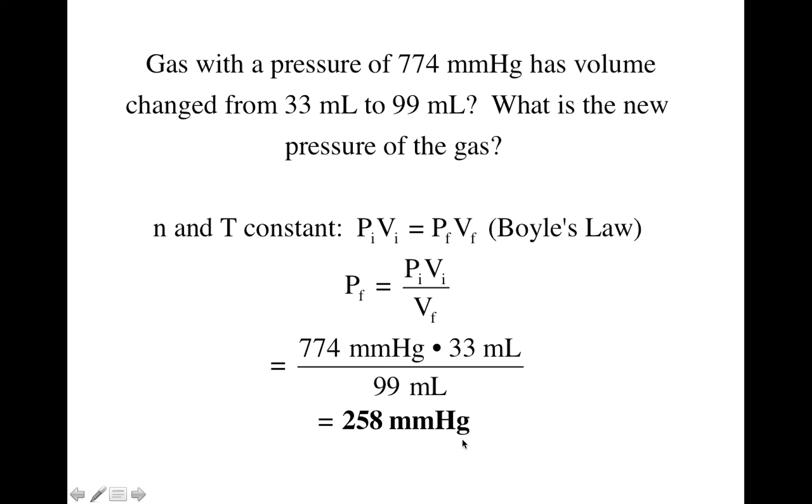Next example, you've got a gas with a pressure of 774 millimeters of mercury, and a volume starts out at 33 milliliters, and it's changed to 99 milliliters. What is the new pressure of the gas?